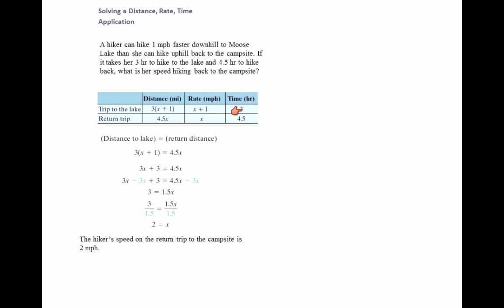We know the time here. The time is 3 and 4.5. We can figure out the distance. Distance equals rate times time. 3 times x plus 1 would be the distance trip to the lake. Rate times time, x times 4.5 or 4.5x, that would be the return trip. We're going to let these two be equal to each other. The distance to the lake must equal the return distance. Here's our equation. Solve for x. We distribute the 3. Isolate the variable and get x equal to 2. The hiker's speed on the return trip to the campsite is 2 miles per hour.